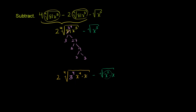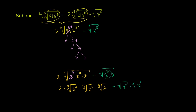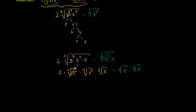Let me write it explicitly. This is the same thing as the fourth root of 3 to the fourth, times the fourth root of x to the fourth, times the fourth root of x, with 2 being multiplied times all of that. And then over here it's minus the principal square root of x squared times the principal square root of x. Now the fourth root of 3 to the fourth power is just 3. The fourth root of x to the fourth power — I need to be careful here: it is not just x, because if x is negative, x to the fourth power is positive, and the fourth principal root gives you the absolute value of x.